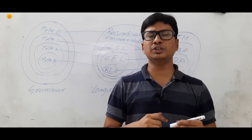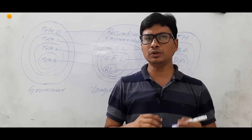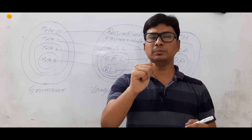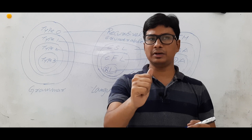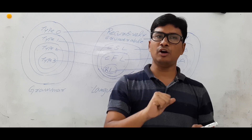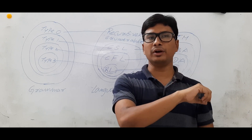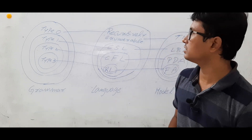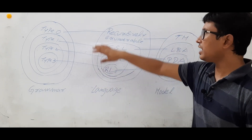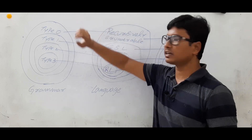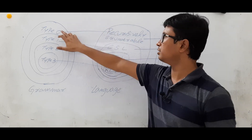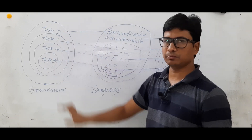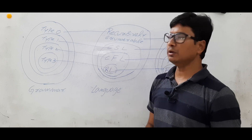Now in this video I want to discuss the relation between a grammar, a language, and a mathematical model. Chomsky has classified grammars into type 0, type 1, type 2, and type 3.